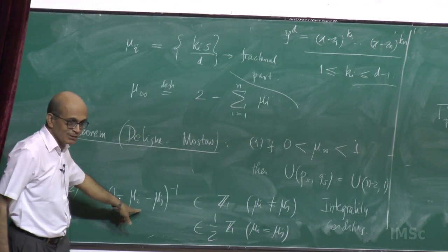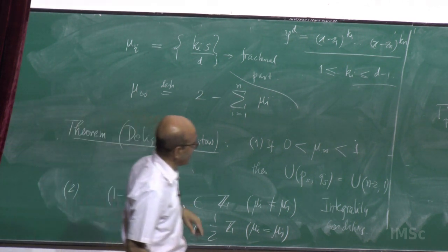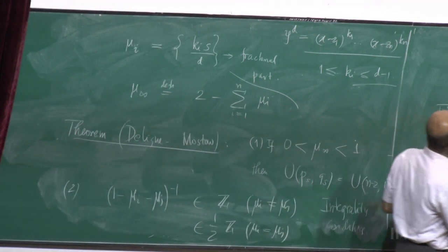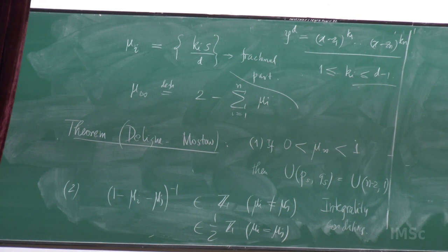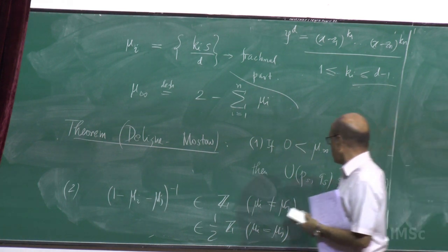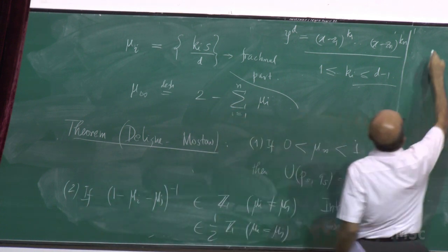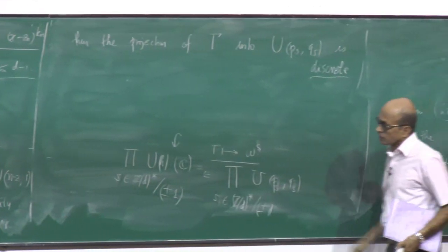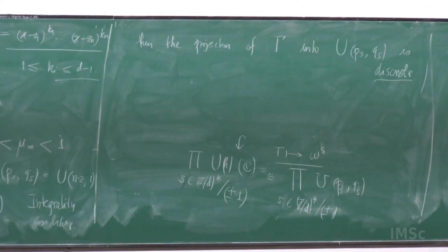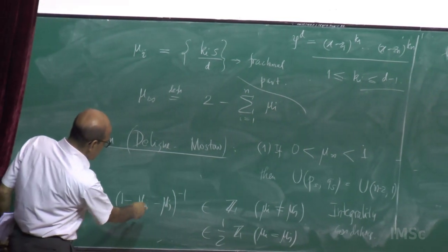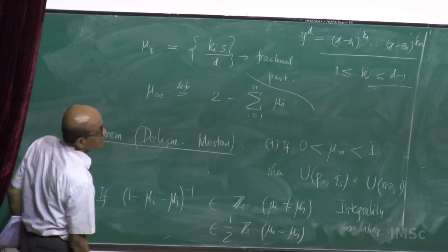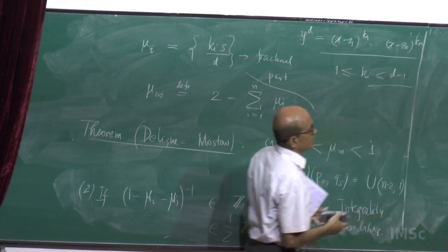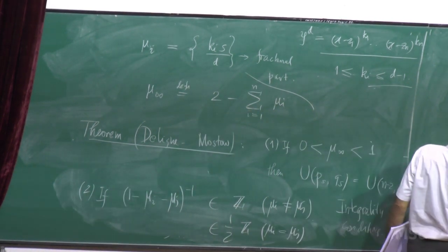These are called integrality conditions — some people call it the semi-stability condition. Suppose this is satisfied. If this holds, then the projection of gamma into U(p_s, q_s) is discrete. So it is a criterion for discreteness of the projection. In fact, they show that for n ≥ 4, this is an if-and-only-if condition: the integrality conditions are satisfied if and only if the projection is discrete.